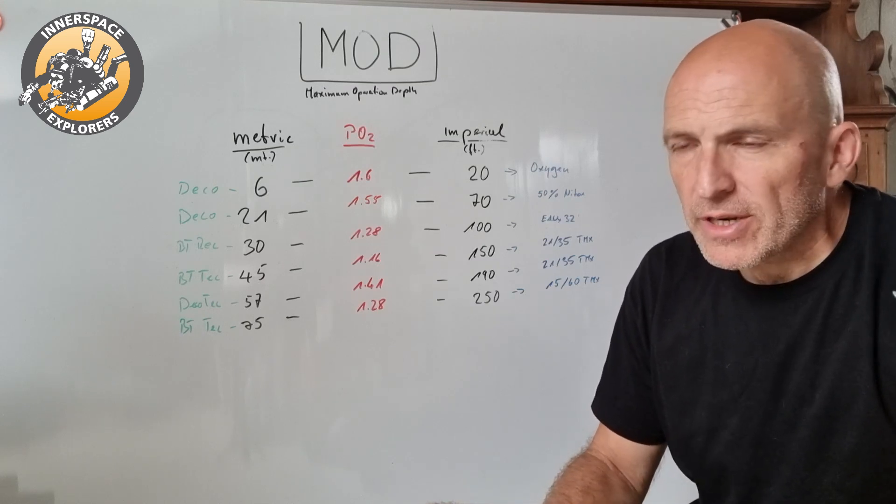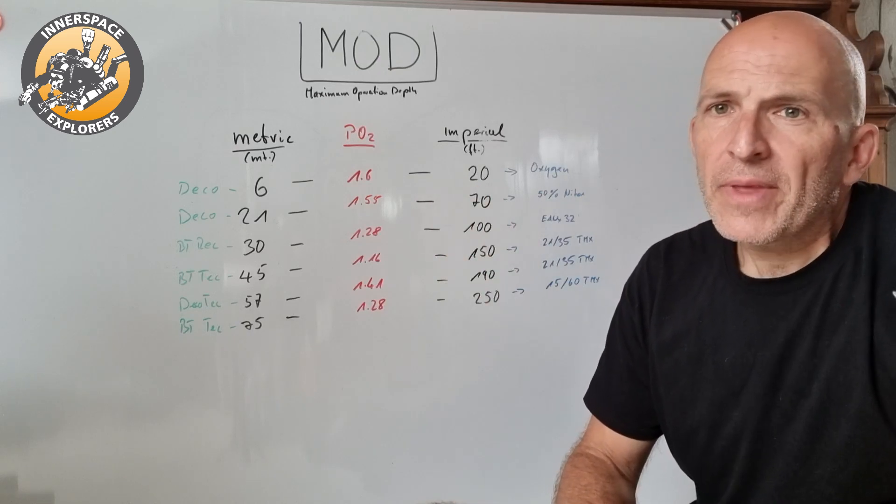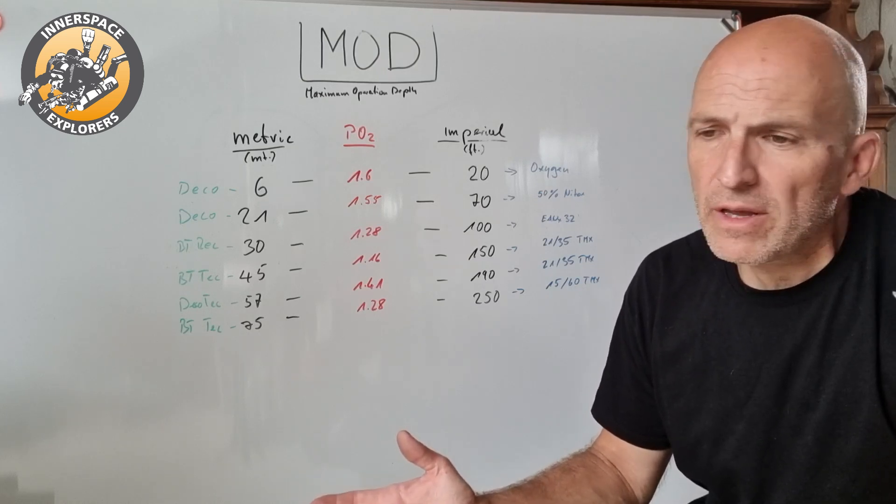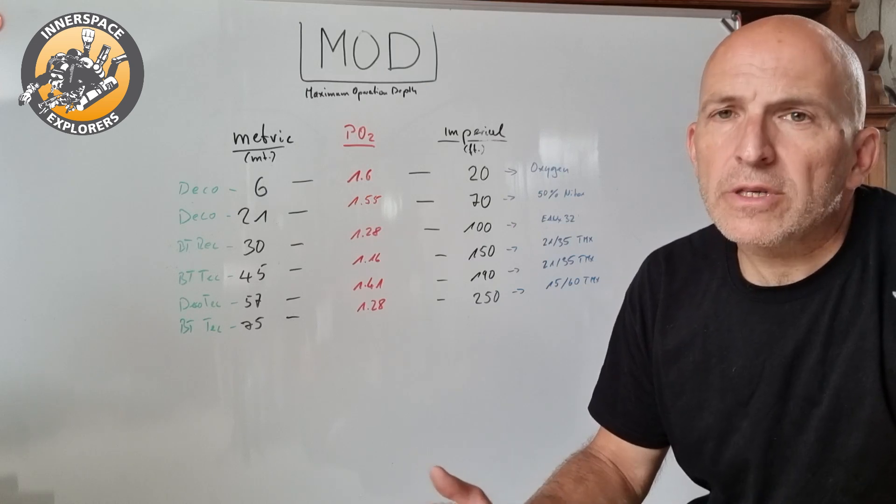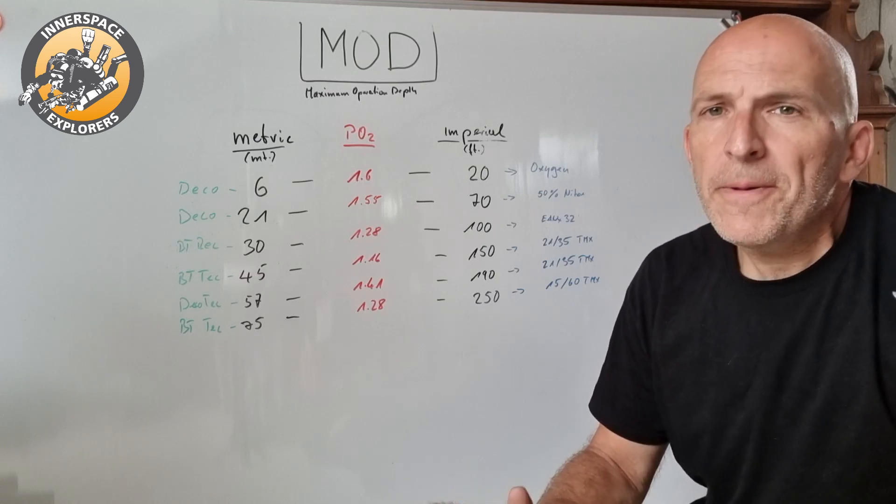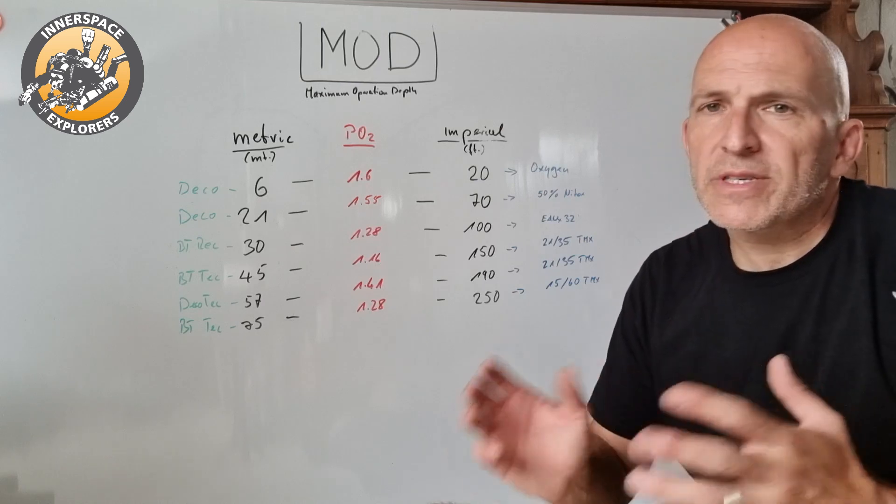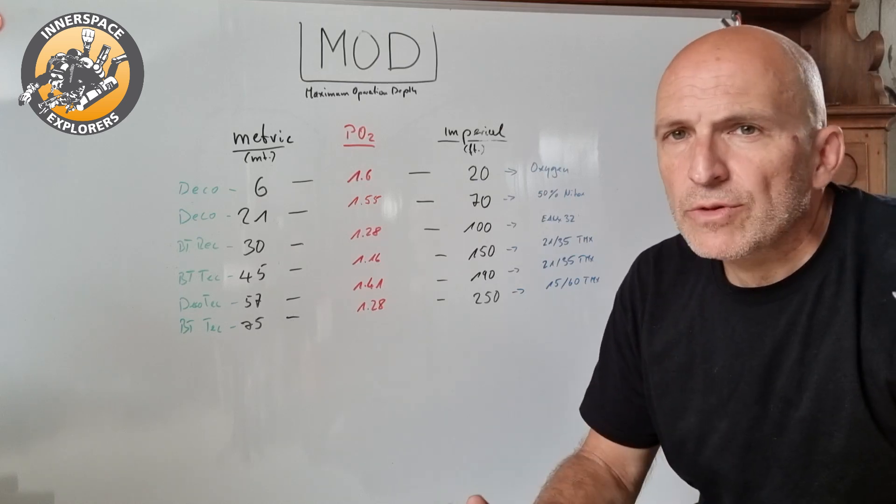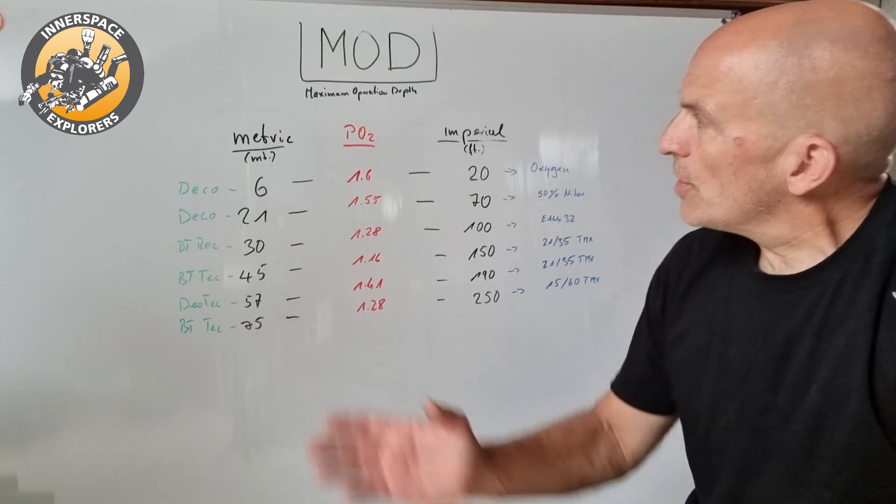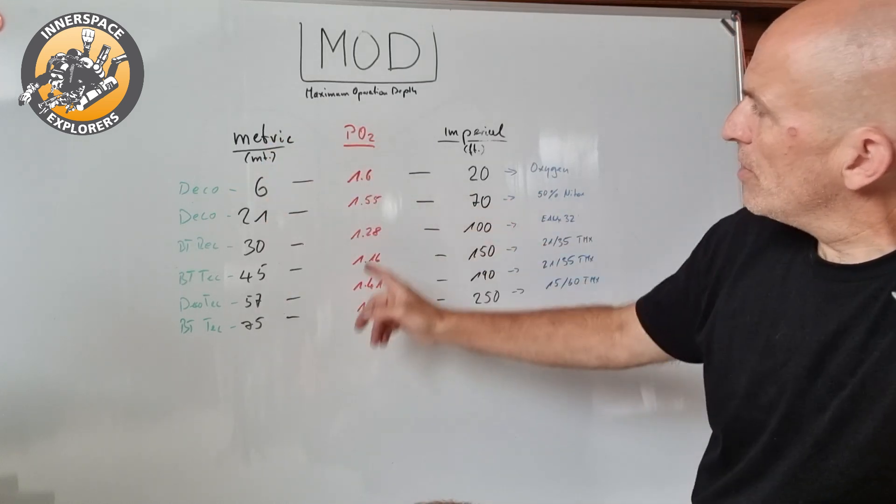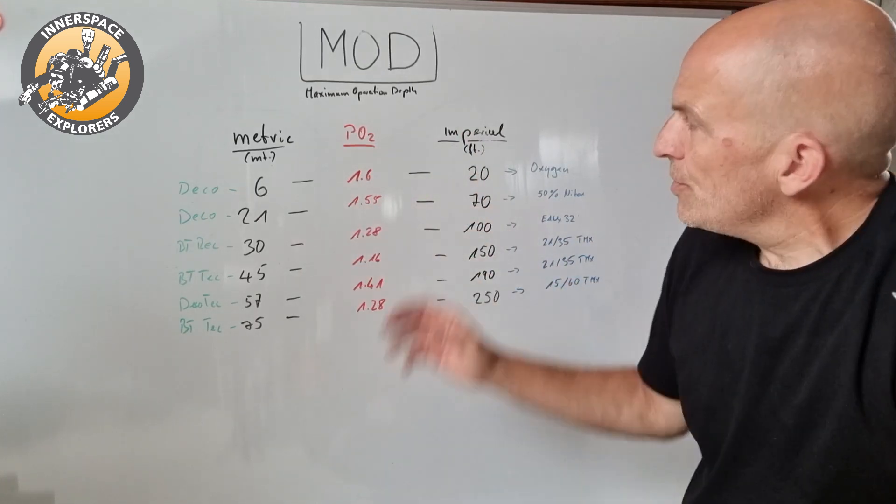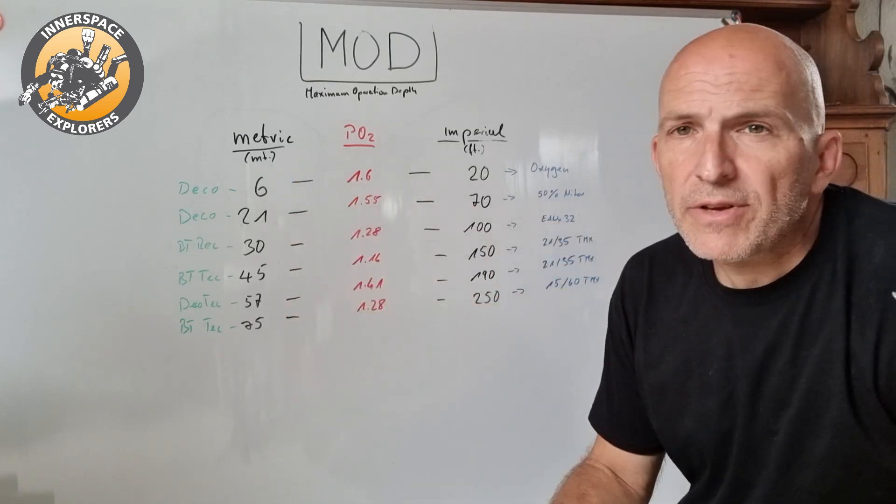If we think about oxygen as an example and our first gas here on my chart, you can breathe down oxygen to 6 meters or 20 feet which gives you a PO2 partial pressure of oxygen of 1.6 bar, which we define as the maximum that we want to be exposed to in the water. Obviously when we talk about hyperbaric treatment we talk about different numbers, but maximum PO2 that we want to experience in the water is 1.6 in rest in decompression.